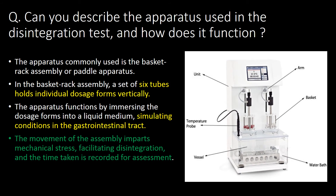Can you describe the apparatus used in the disintegration test and how it functions? The apparatus commonly used is the basket rack assembly or paddle apparatus. In the basket rack assembly, a set of six tubes hold individual dosage forms vertically. The apparatus functions by immersing the dosage forms into the liquid medium, simulating conditions in the gastrointestinal tract. The movement of the assembly imparts mechanical stress facilitating disintegration, and the time taken is recorded for assessment.